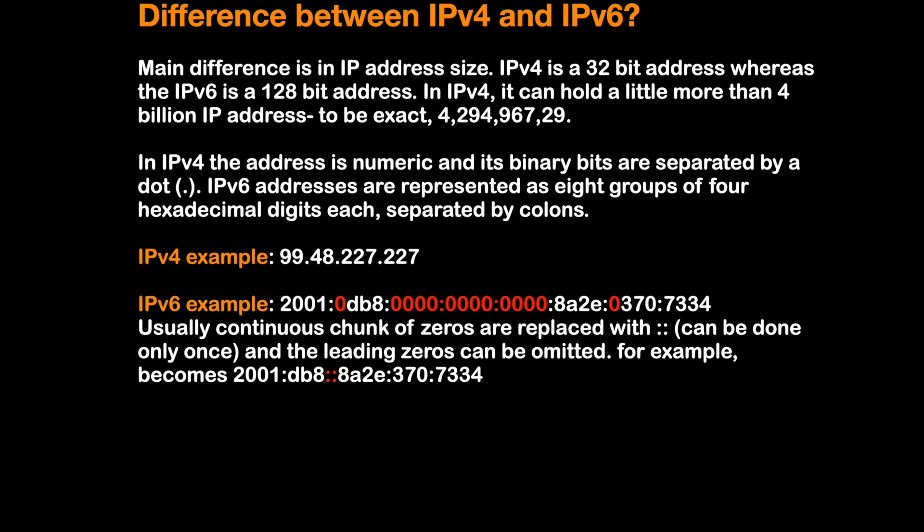Here is an example of IPv4: 99.48.227.227. For IPv6 we have eight groups or blocks separated by colons. To minimize the size of the address, IPv6 has some compression rules: continuous chunks of zeros are replaced with a double colon, but we can do this only once in an address. Also, within a block, any leading zeros can be omitted entirely. IPv6 also has the mechanism to properly configure the address. These are the basic differences, and I think it would be helpful for you.